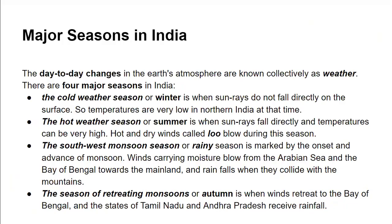The major seasons of India — there are four major seasons. The cold weather season, or winter season, falls under the months of December to February. The hot weather season, or summer season, covers March to May. The southwest monsoon season, or rainy season, comes in the months of June to September. The season of retreating monsoon, or autumn season, spans October and November.